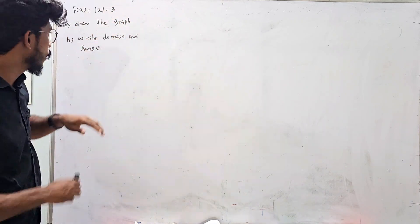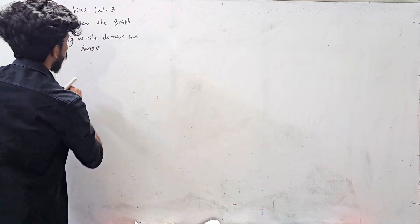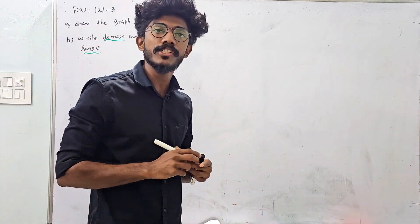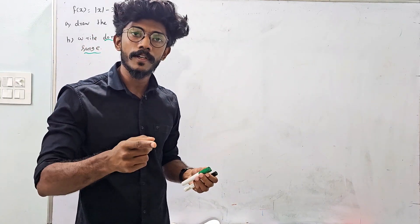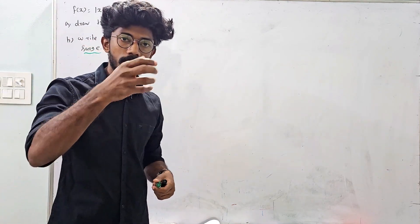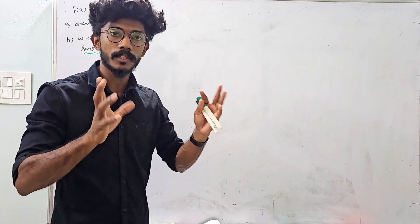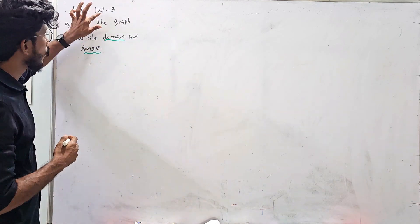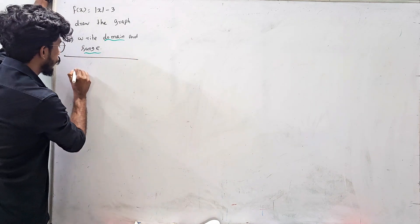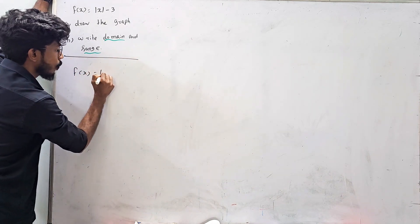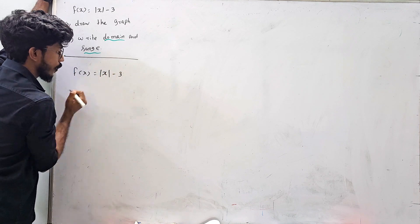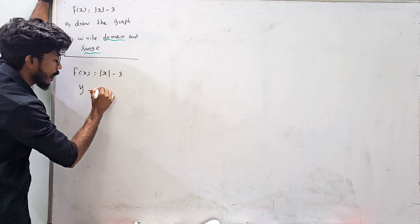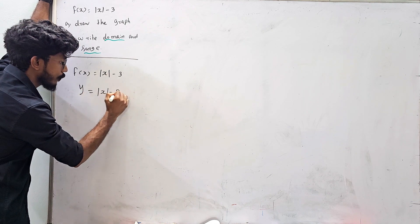We will ask the question to write the domain and range. This is important. First, we will ask the graph. You will find the y value. y is equal to mod x minus 3. Then, f of x is y.